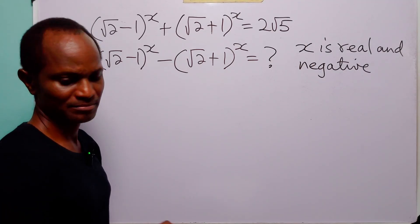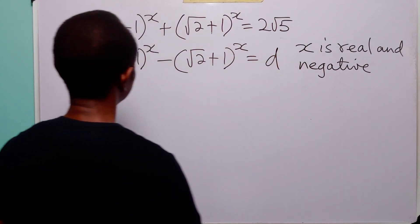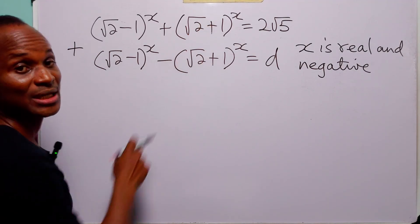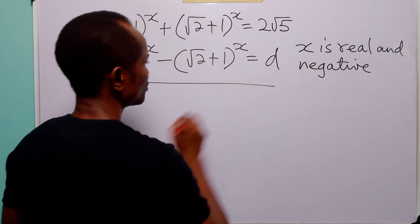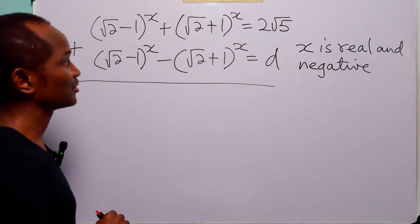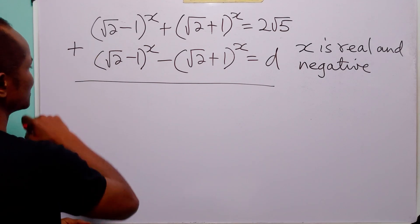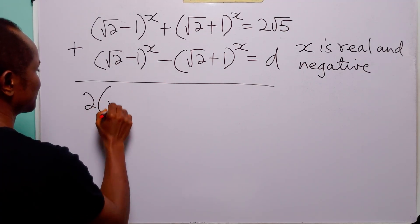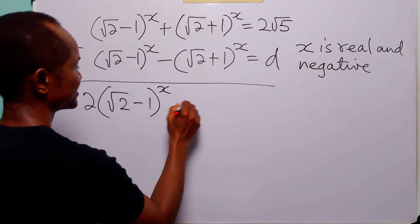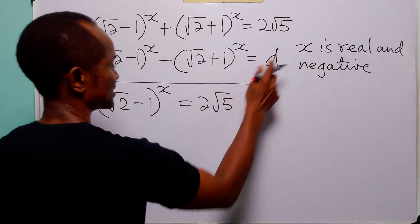To solve this problem, let us call the value that we are looking for d. The next thing we are going to do is add these two equations. Notice that when we add them, terms cancel because one is positive and one is negative, and we are going to have 2 times (√2 - 1)^x is equal to 2√5 plus d.